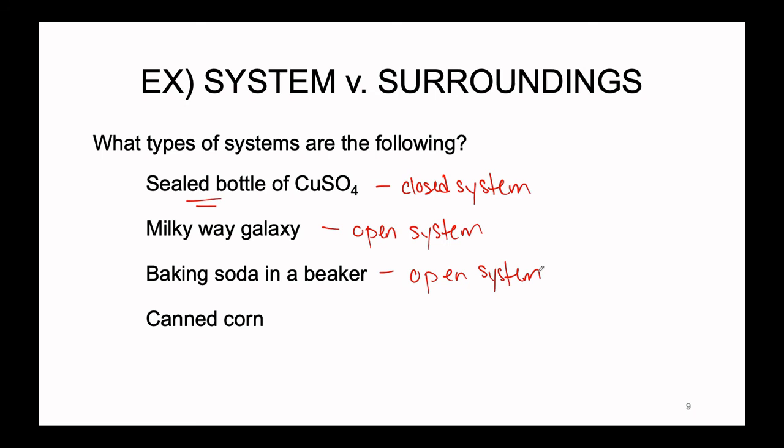Last: canned corn, assuming it is a sealed, unopened can. We can still heat it up or cool it down, so it is definitely not isolated. But if it is truly sealed, no matter is exchanged — making it a closed system. The caveat is that if it were opened, the same arguments as the beaker apply: dust could get in, something could spill, so an open can of corn would be an open system.